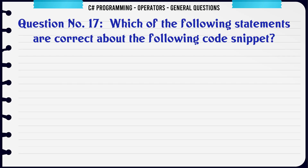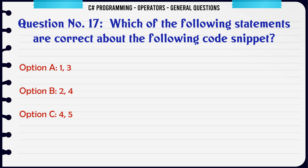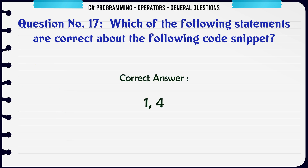Which of the following statements are correct about the following code snippet? A: 1, 3. B: 2, 4. C: 4, 5. D: 1, 4. The correct answer is 1, 4.